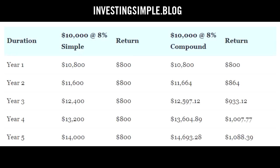Compound interest, on the other hand, allows you to earn interest on your interest. If you had that same investment of $10,000 at 8% but earning compound interest over 25 years, your account would grow to $68,500 instead of $30,000.